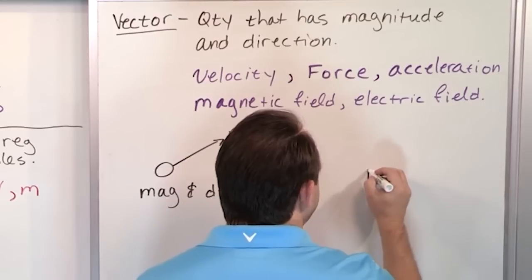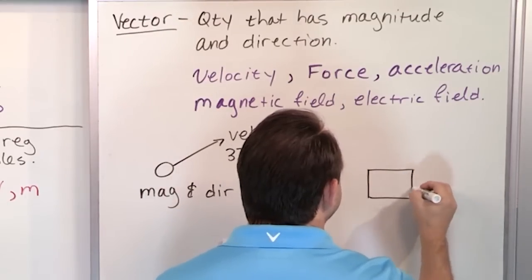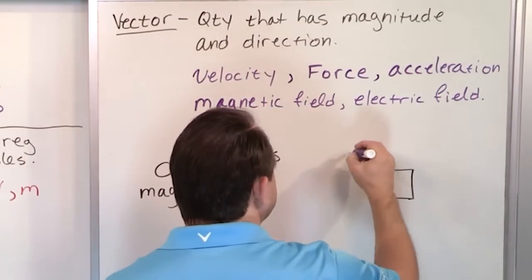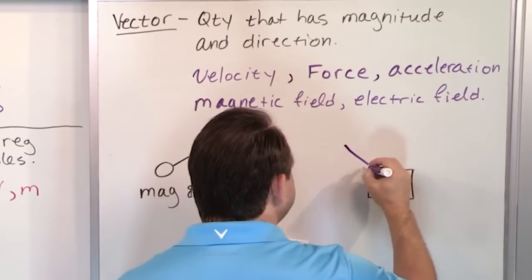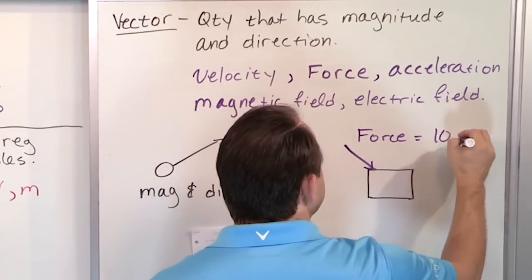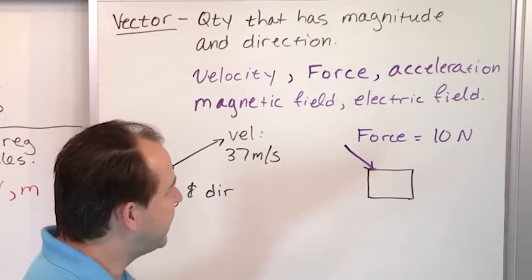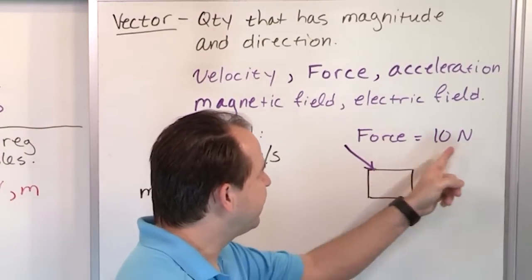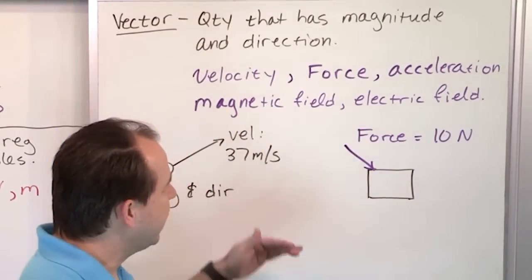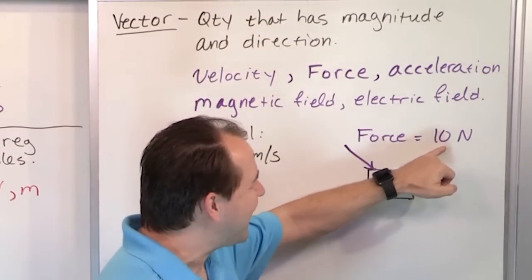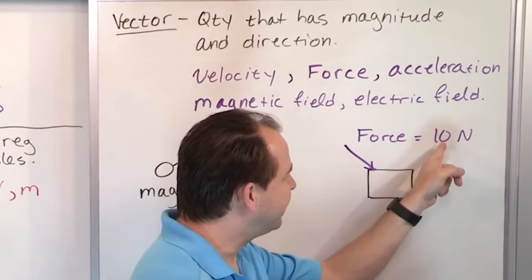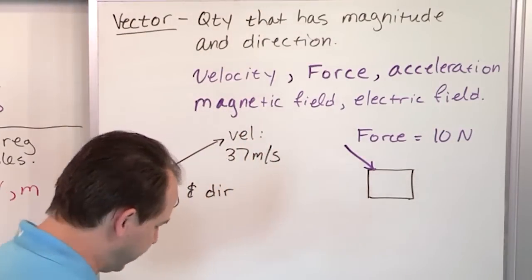Let's take another quick example. Let's say we have a crate, some kind of a box sitting on the floor, and I'm going to push on it with a force. I'll represent that force as an arrow: force, 10 newtons. The unit of force is called a newton, named after Isaac Newton. I'm pushing with this magnitude but also at this direction. That's why force is a vector — it has a size and also a direction associated with it.